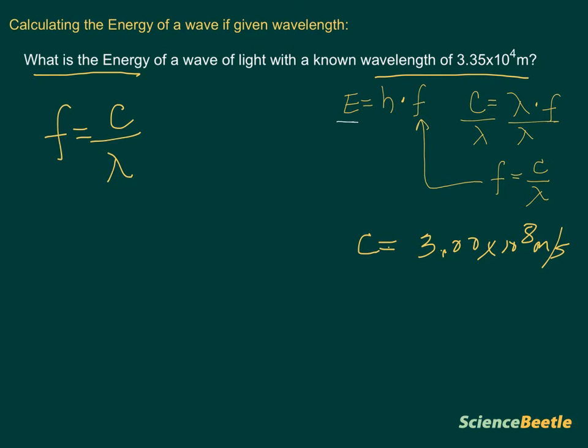We're going to take the C, erase that, and put 3.00 times 10 to the 8 meters per second. And then in the denominator for that wavelength, we're going to substitute the wavelength that's given to us. So we're going to put 3.35 times 10 to the 4 meters. Notice here the meter units will cancel in the denominator and numerator, leaving you the units of seconds, which is going to be the base for Hertz.